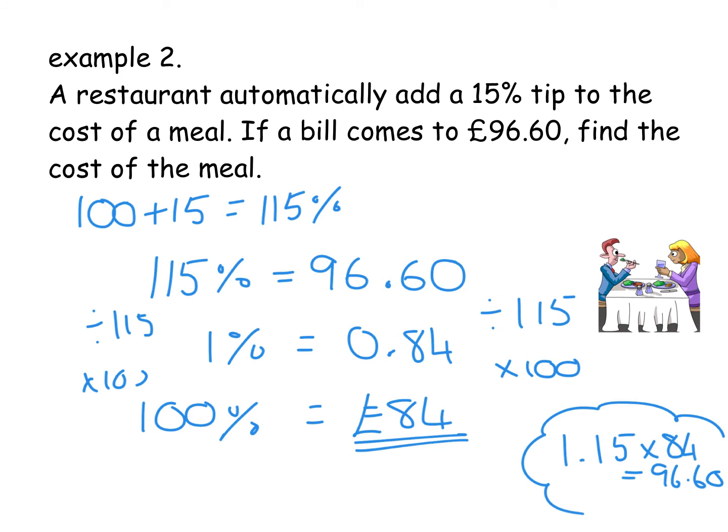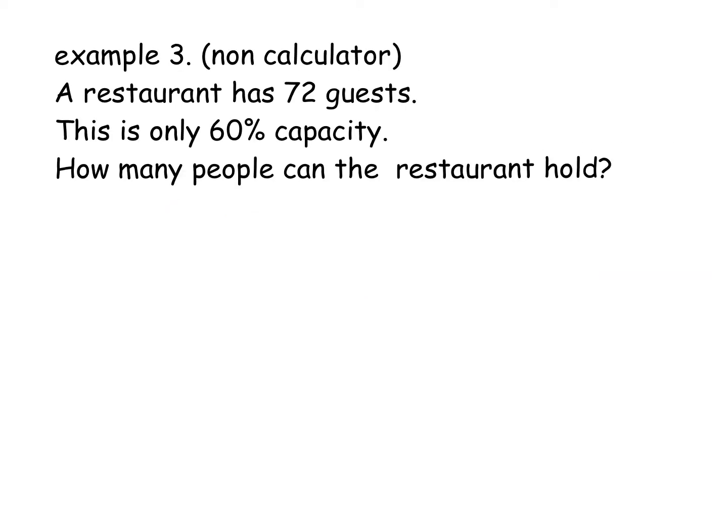I cannot stress enough — it is not a case of find 15% and take it away. That's too simple for a National 5, and if you're doing that you're doing it wrong. I've got one more example, and this one is without a calculator. Without a calculator, sometimes we change up our method ever so slightly. This one says a restaurant has 72 guests and this is only 60% capacity — the restaurant is only 60% full. I want to know how many people the restaurant can hold, so again I'm looking for 100%.